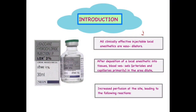All the clinically effective injectable local anesthetic agents are inherently vasodilators. By the term vasodilator, we mean that when these are injected they cause dilatation within the blood vessels. So after the deposition of local anesthesia into the tissues, the blood vessels — that is the arterioles and the capillaries — in that area are subjected to dilatation, which leads to an increase in perfusion at that particular site.